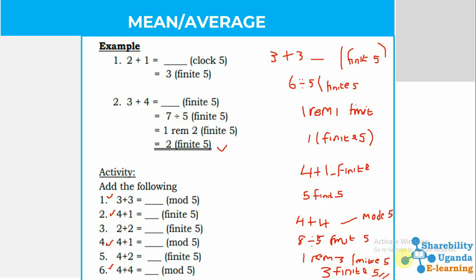That is how we solve numbers using addition in finite systems. If your sum is more than the finite number itself, you divide it by the finite number and write the remainder — then that remainder finite five becomes your final answer. Thank you very much for being part of this lesson. Stay blessed and have a nice moment.